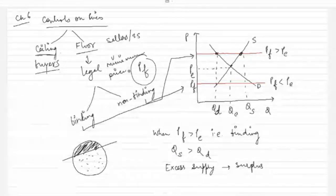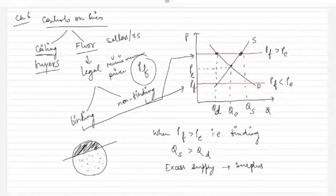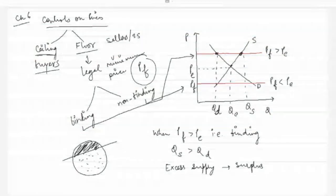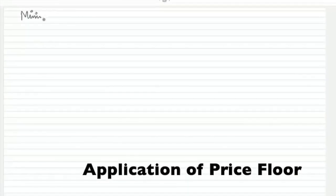Similar to the case of price ceiling — where the purpose was to help buyers but the benefit could not reach all buyers — here we see that the price floor meant to help sellers is not useful for all sellers. Some sellers who manage to sell their commodities will benefit, but other sellers will not be able to sell. Let's look at an application of this concept: minimum wage.